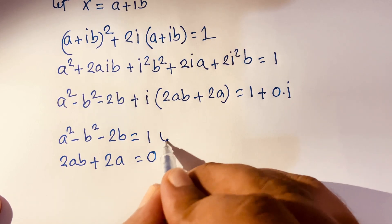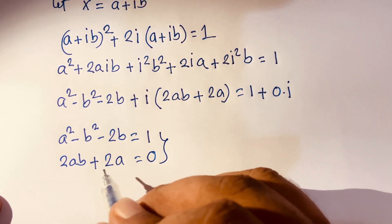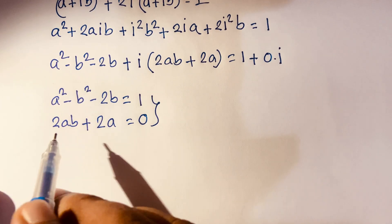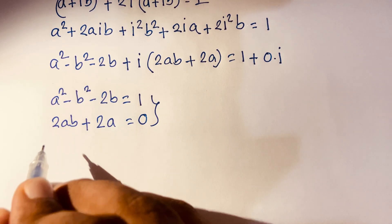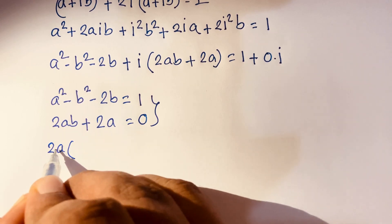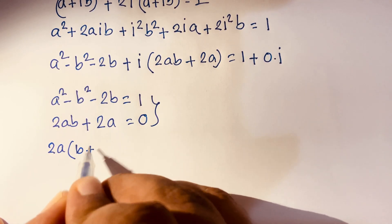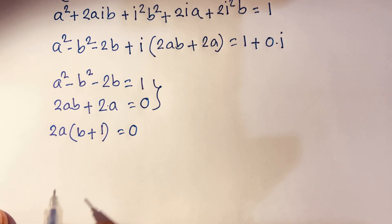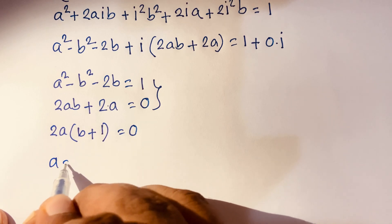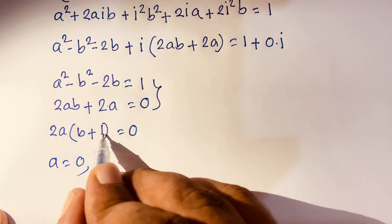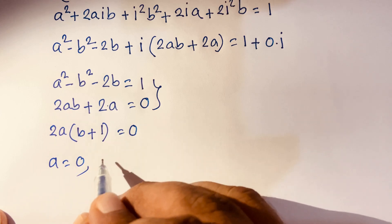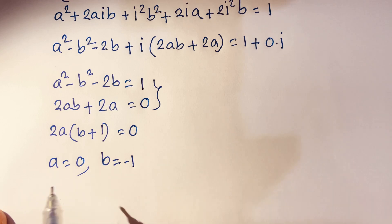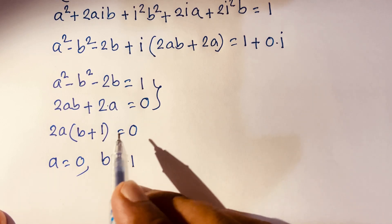From the imaginary equation 2ab + 2a = 0, factoring out 2a gives 2a(b + 1) = 0. So either a = 0 or b + 1 = 0, meaning b = −1.